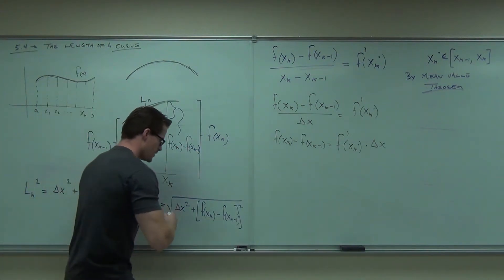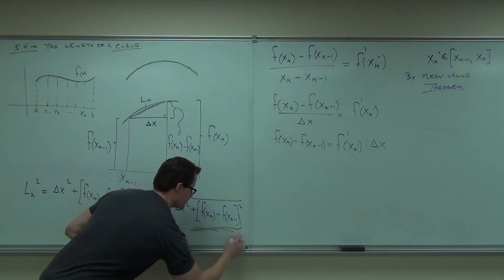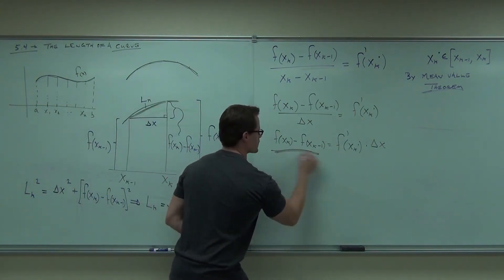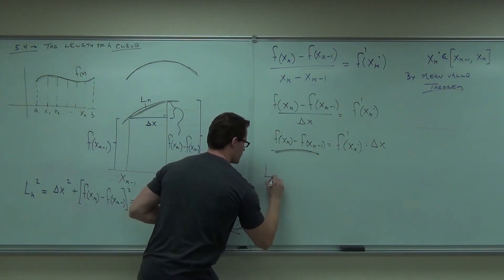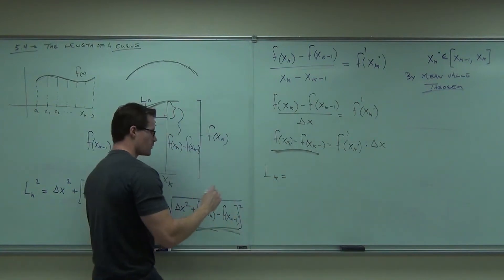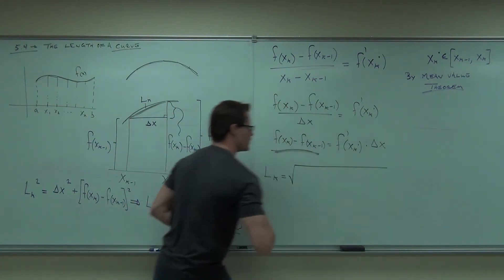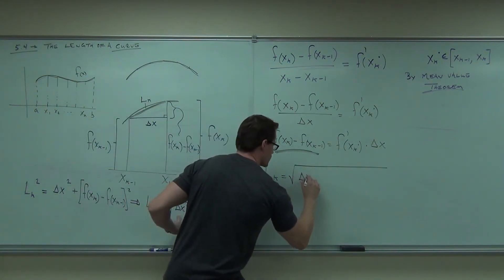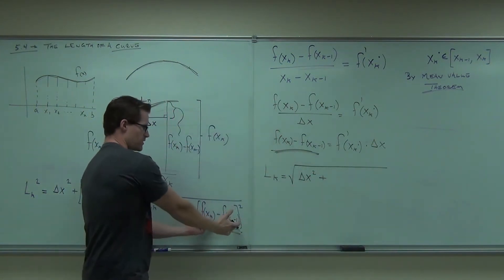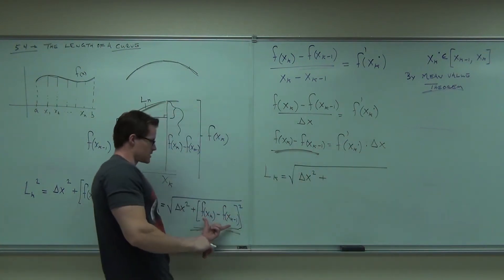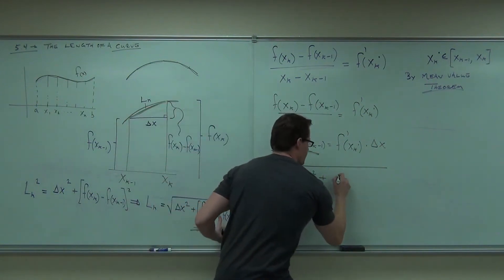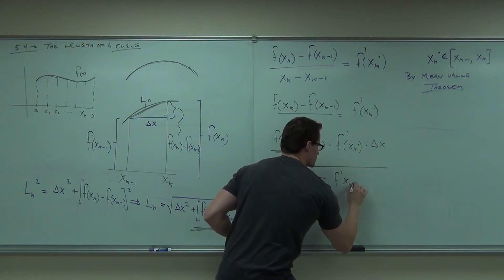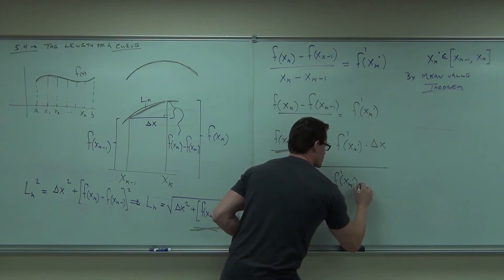Here's what I'm going to do. I'm going to notice that this piece right here is the same as this piece right here. I'm going to put that thing in instead of it. So L sub k equals, we've got the square root. Inside the square root, we have delta x squared plus this big fat piece of junk we're going to replace. Instead of this, we have f of x sub k minus f of x sub k minus 1. We're going to have f prime of x sub k times delta x.